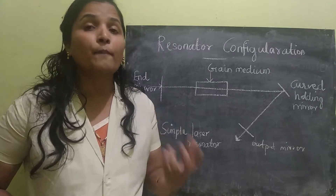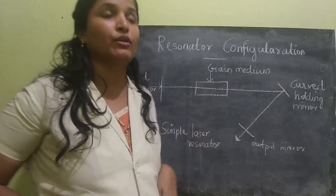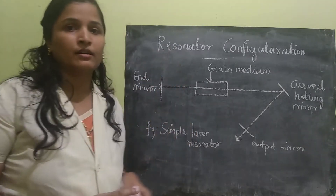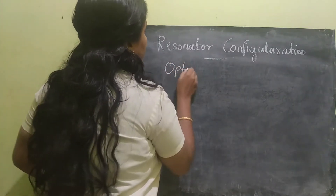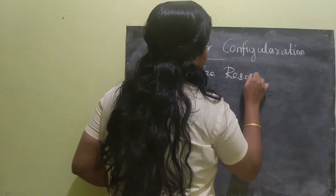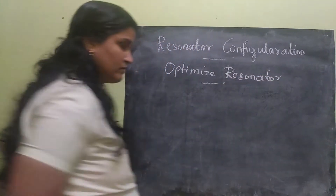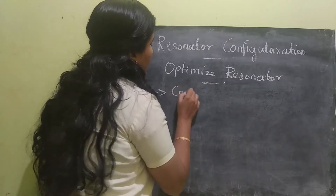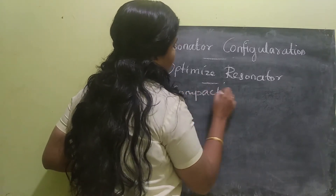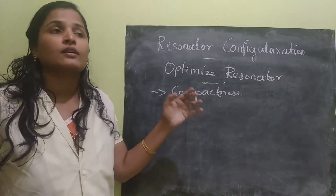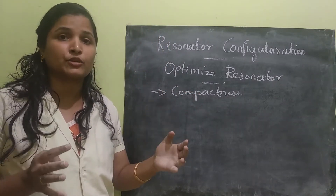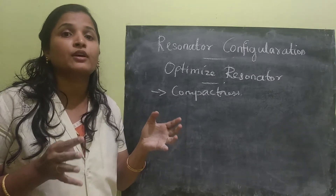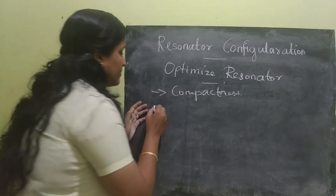Now let us see the optimization of laser configuration — what are the things we should optimize when designing a laser resonator. For optimizing the laser design, we should focus on these things. First is compactness: the design should be as simple as possible and very small. It should accommodate everything without being complex.